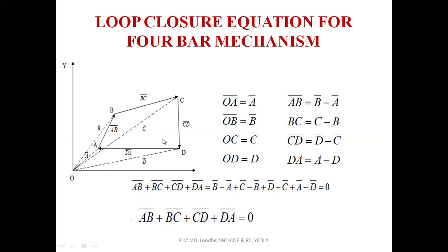In vector form, AB bar equals B bar minus A bar. BC bar equals C bar minus B bar. CD bar equals D bar minus C bar. DA bar equals A bar minus D bar. We have taken the position of each respective point with reference to the origin in this diagram.